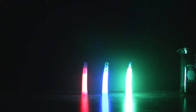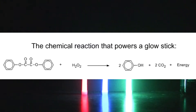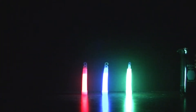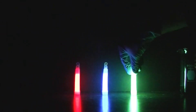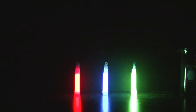When a glow stick is activated by snapping, there are chemicals that mix inside the glow stick and a chemical reaction starts. That chemical reaction gives off a lot of energy. Some of the energy from the chemical reaction gets transferred to fluorescent dyes that are contained in the glow stick. After those fluorescent dyes gain the energy, they give off the energy as light. You get the different colors — like red, blue, or green — from different dyes contained within the light stick.